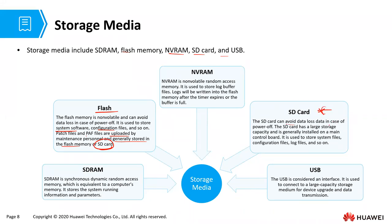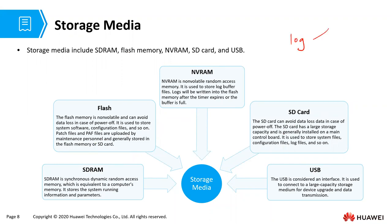Patch files and path files are uploaded by maintenance personnel and generally stored in flash memory or the SD card. The SD card avoids data loss in case of power off. It has large storage capacity and is generally installed on the main control board, used to store system files, configuration files, log files, and other data. USB is normally just attached externally. Non-volatile RAM is like SDRAM but non-volatile — its purpose in most cases is for the log, which is a record of what is happening to the device. The log buffer can become a very huge file, and if stored in RAM it can slow down the machine, so we have NVRAM to handle that.